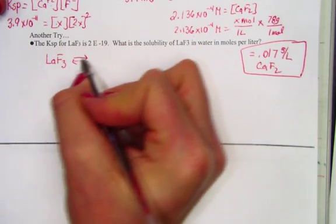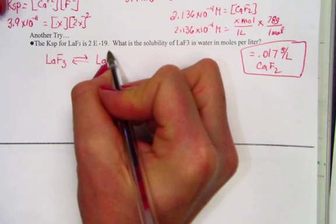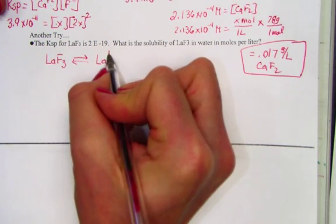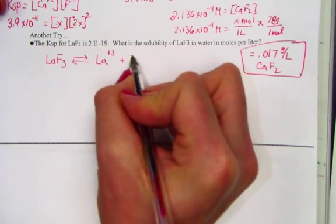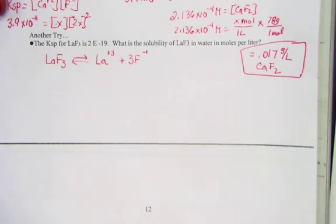is in dynamic equilibrium with its ions. Lanthanum, who must be a plus 3 charge, and 3 fluorides, which are minus 1.